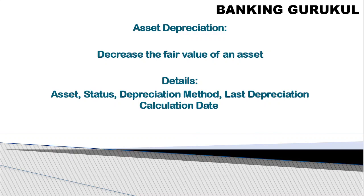To recap, depreciation means decreasing the fair value of an asset. For example, an asset purchased today for 1 lakh may become 8 lakhs next year — so 20% is booked as depreciation expense by debiting expenses and crediting the asset, decreasing the asset value and reducing profit. Details captured during depreciation include: asset status, type of asset, depreciation method, and depreciation calculation date. Thank you — if you like the video, please subscribe and share with your friends.